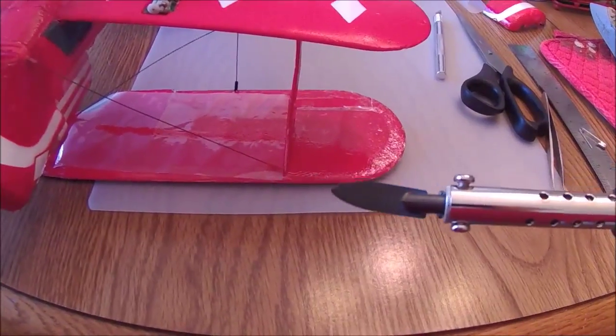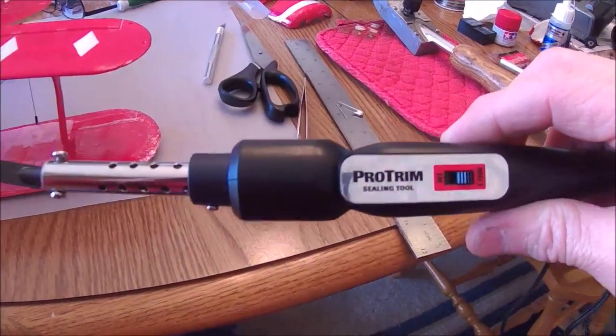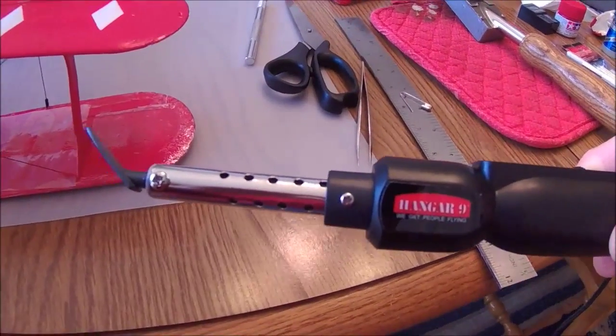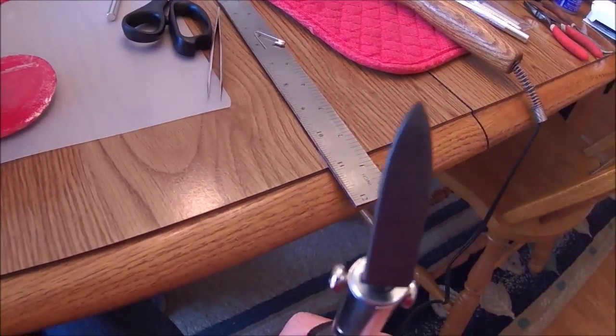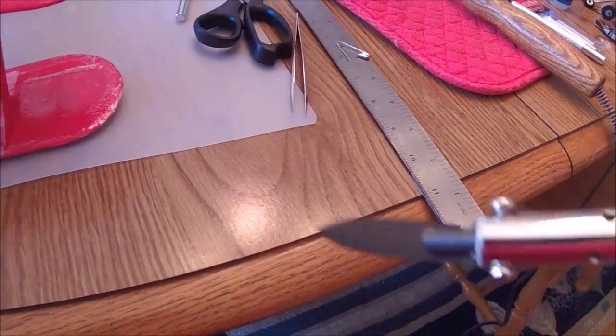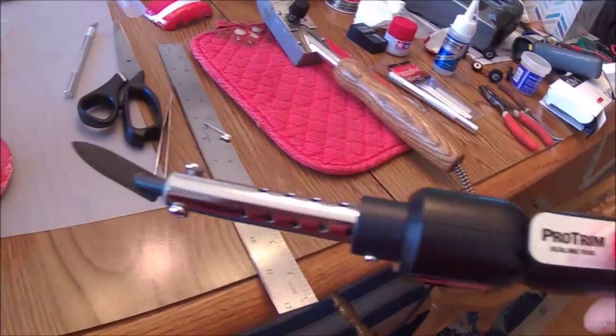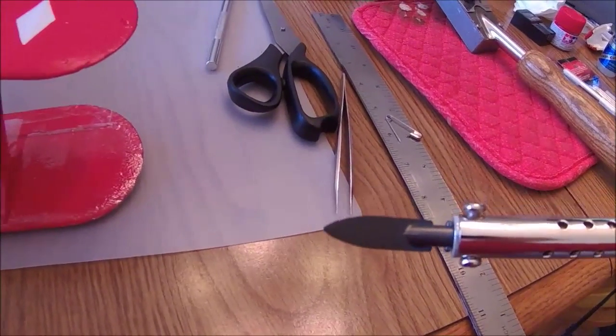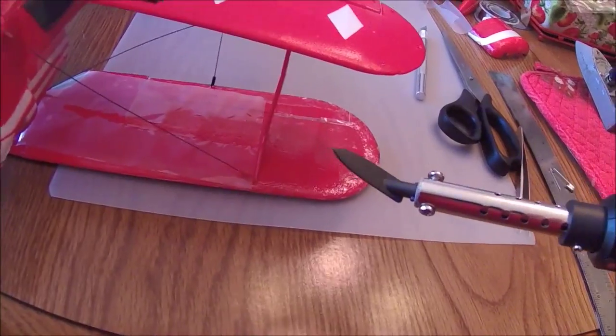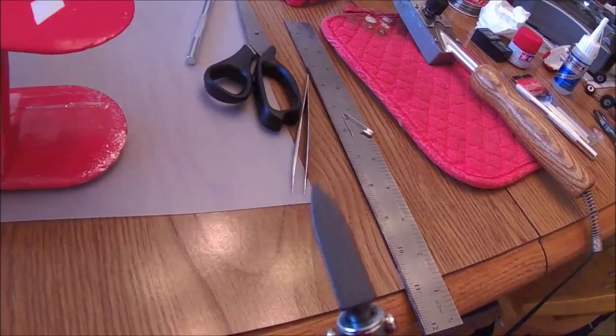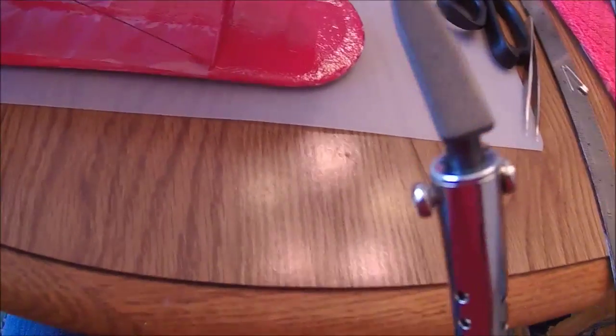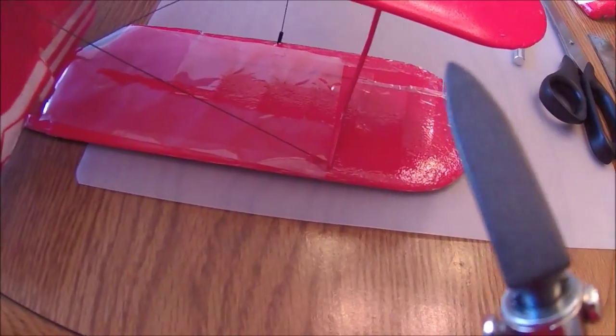Now what I'm using on this model to do this is, this is called a Pro-Trim Sealing Tool and Hanger 9 makes it. I picked it up at my local hobby store and you can see it's got a very small iron on the end. It has a high and a low setting. You want to use it on the low setting. The high setting is way too hot, gets the tip up over 230, 240 degrees and that's too hot. You want to try to stay around, I think right now it's running probably about 200, 210, which some on there say is too hot, but I had a hard time trying to get it to laminate any lower than that.